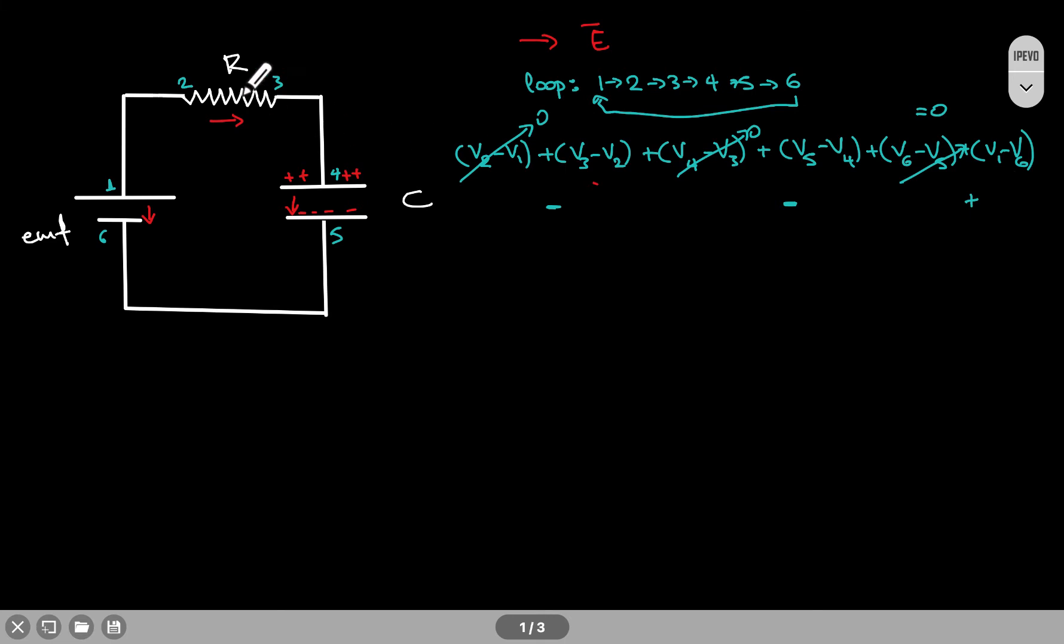Now, since from 2 to 3 it's an atomic resistor, I have simply I times R. I'm going to come back to this at the end. From 6 to 1, I'm moving across the battery, so this is an EMF, and the whole thing is going to be a 0.